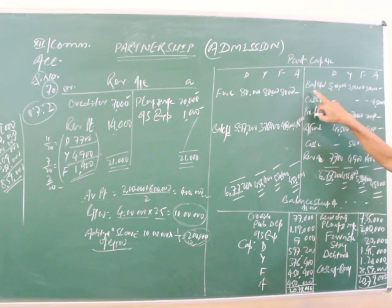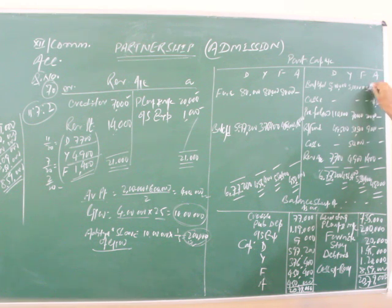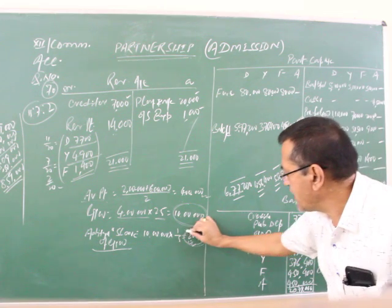First of all, write opening balance of the partner's capital. Balance b/d: Dibya 5,10,000, Yassim 3,70,000, and Fatima 1,65,000. Adit is bringing 4,50,000. And Adit is bringing goodwill 2,00,000.